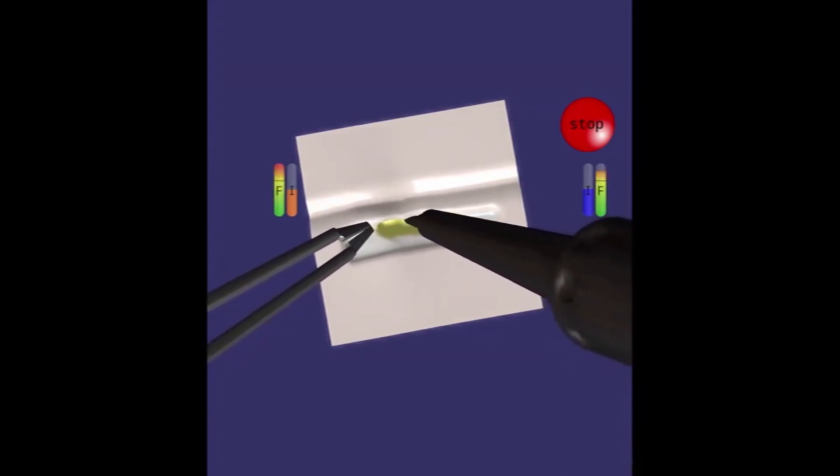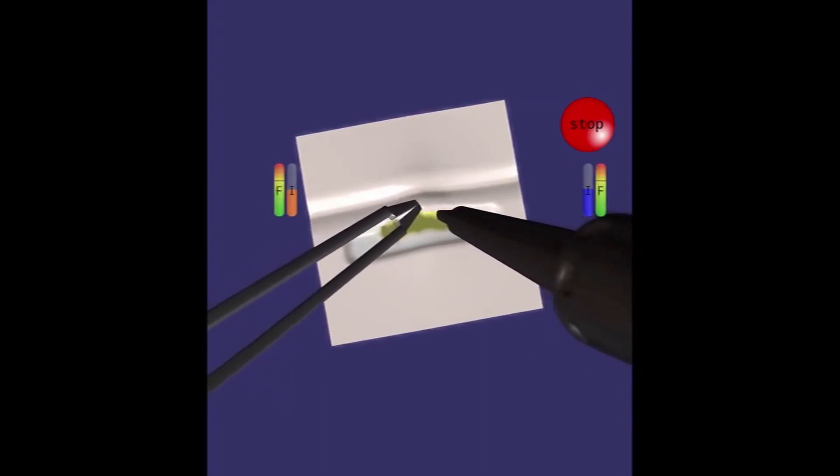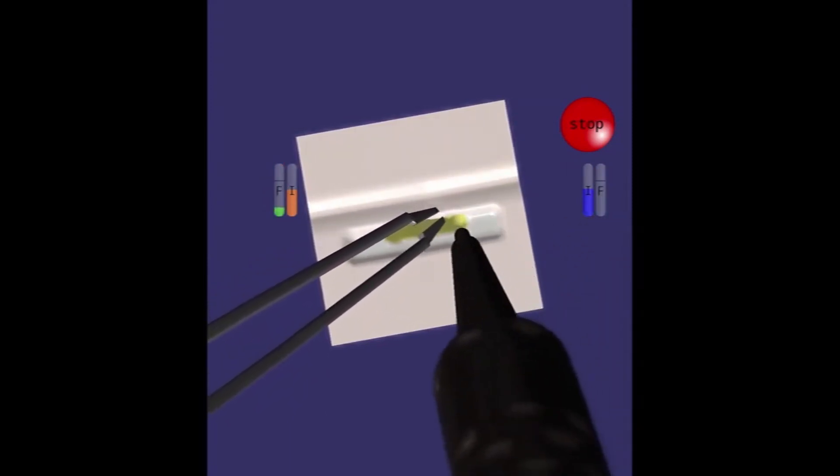After removing the superficial layer of tumor, the participant begins to use the bipolar to gently grasp the pia and expose the deeper parts of the lesion.